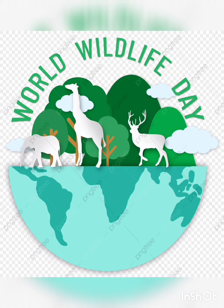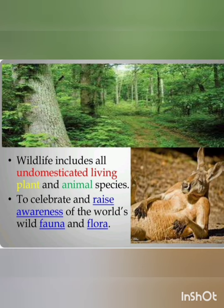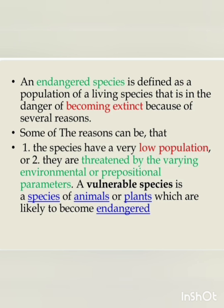According to data from the International Union for Conservation of Nature's red list of threatened species, over 8,400 species of wild fauna and flora are critically endangered. Wildlife includes all undomesticated living plant and animal species. An endangered species is defined as a population of a living species that is in danger of becoming extinct because of several reasons.